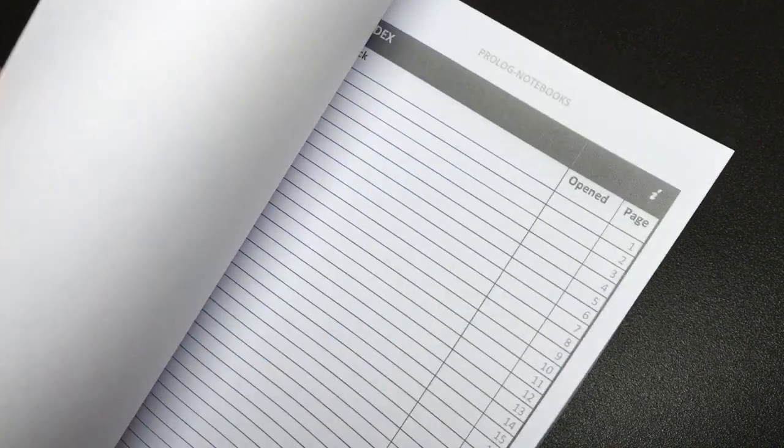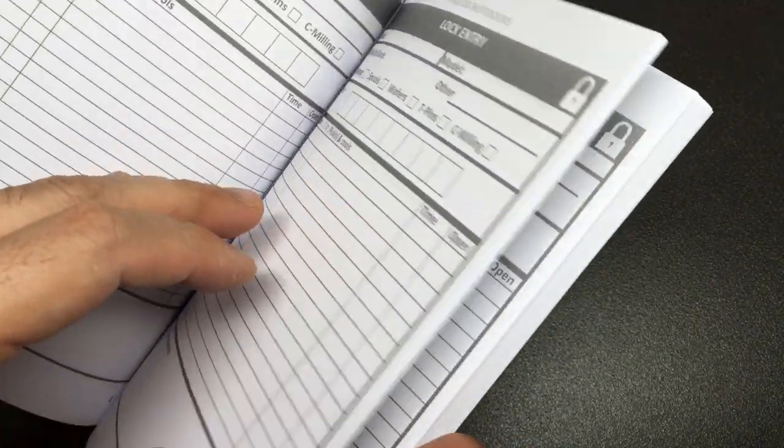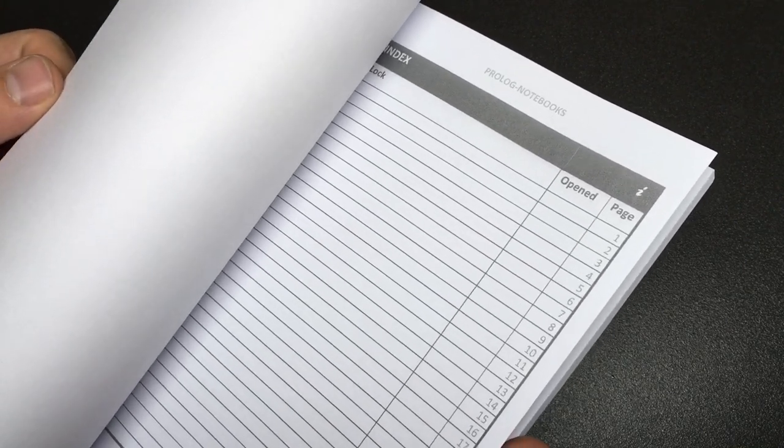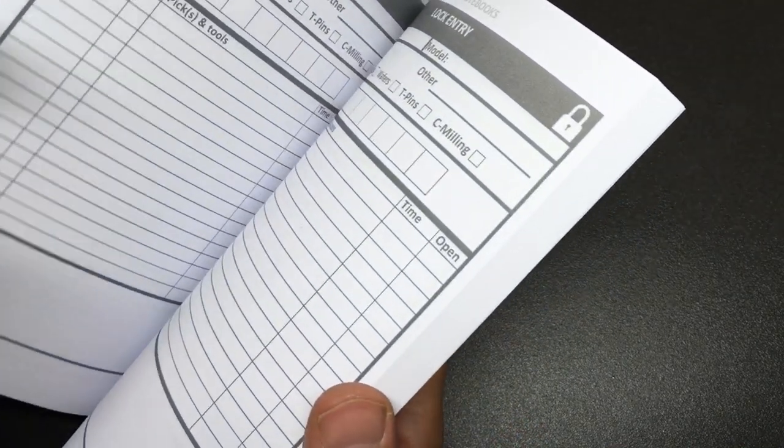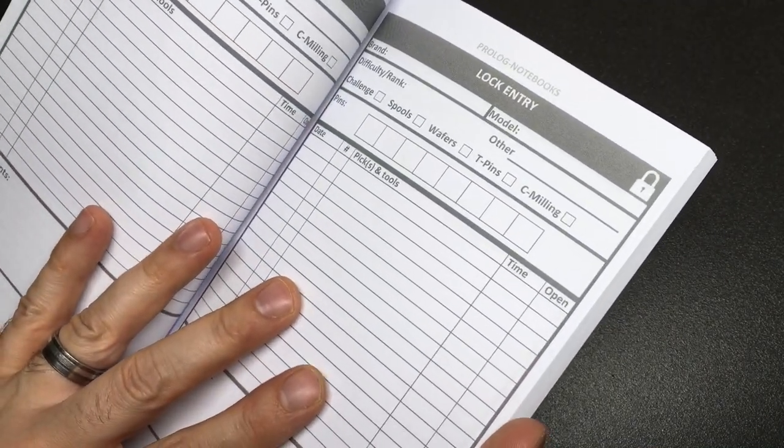And I quite like the idea of having the index. I guess what I would do is I'd fill this up first and then I'd probably then do the index afterwards because I quite like things to be neat and I'd alphabetize it. But that's just me. Other people would probably just do it as they went along.